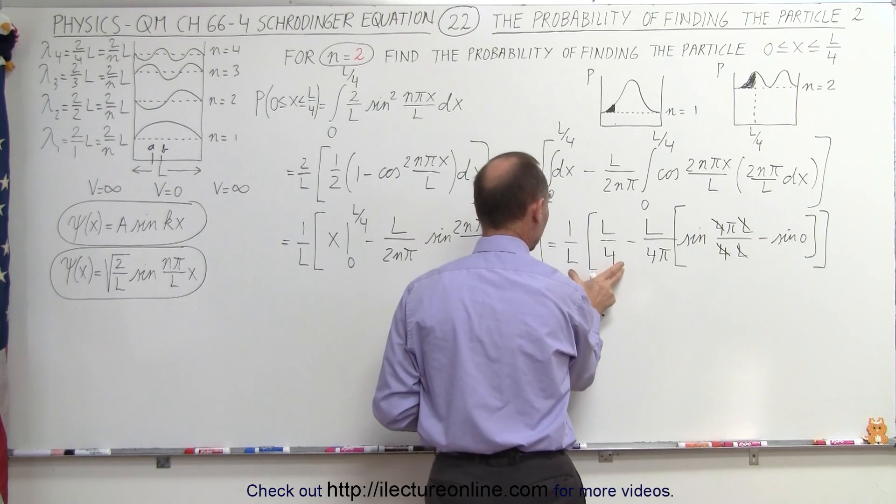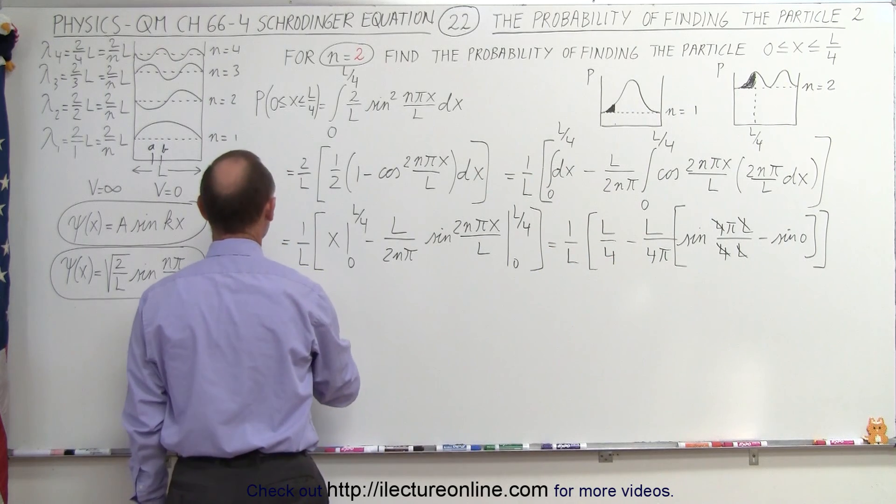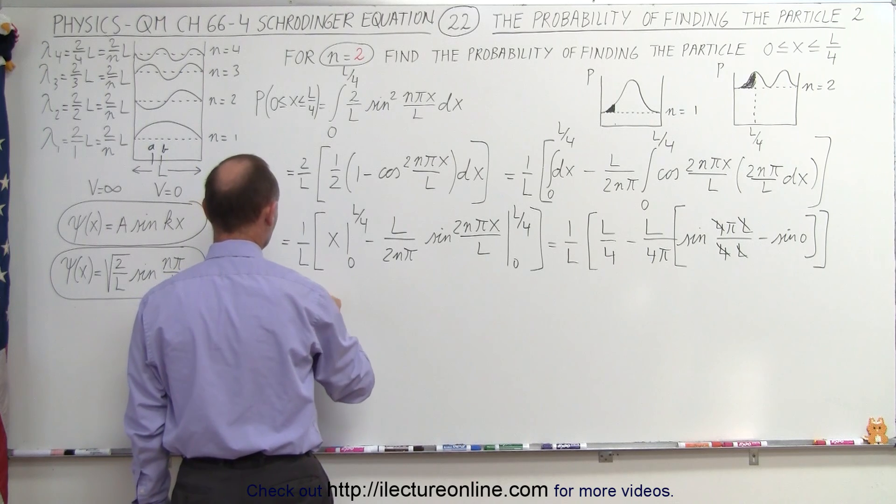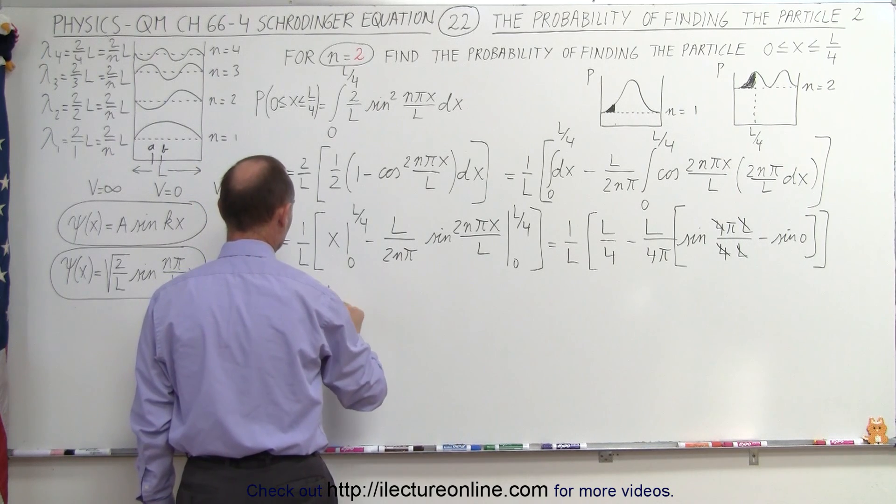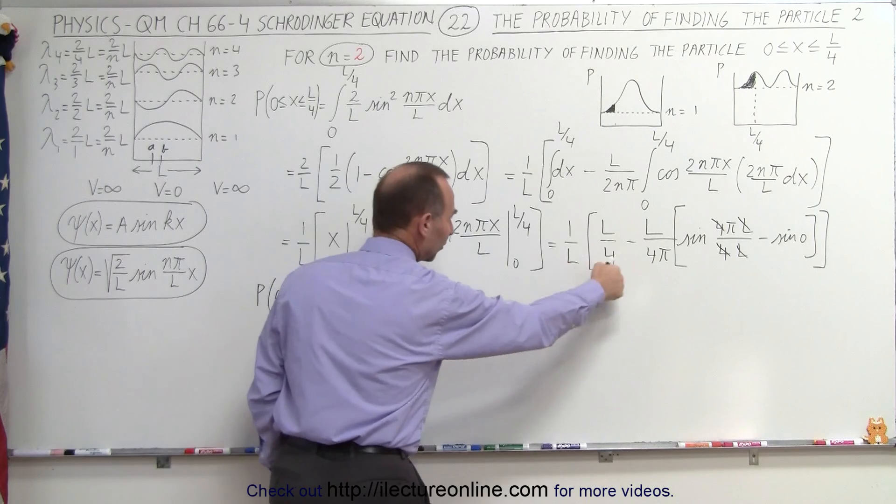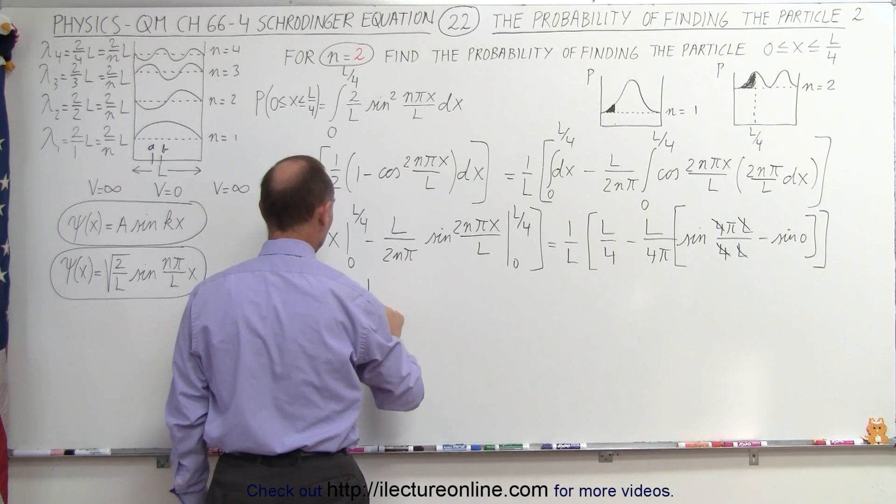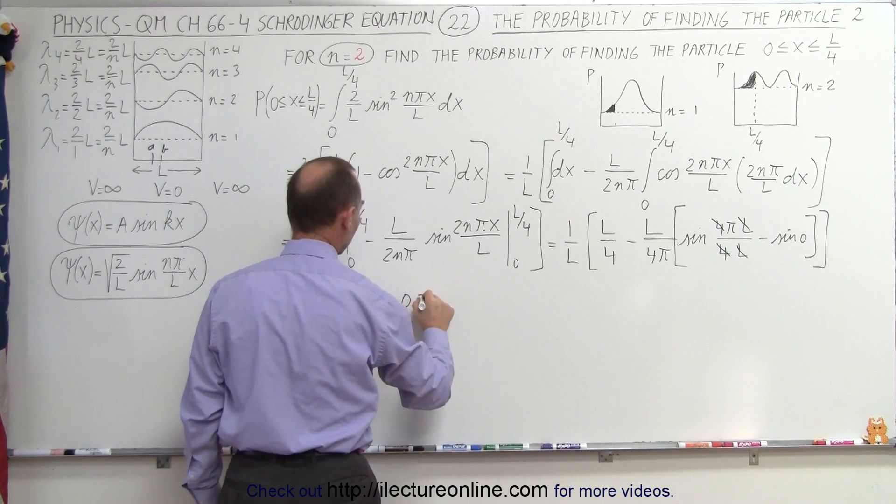All we end up with is this result right here, which means that the probability of finding the particle between 0 and L over 4 is going to be just this first result, and the L's cancel, which means it's equal to 1 quarter, which is 0.25.